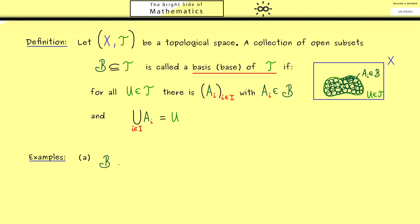This is what we can do when B is simply given as the whole topology T. Then we don't gain anything, but of course this fulfills the definition. So this might not be an interesting basis, but it works for every topology T.